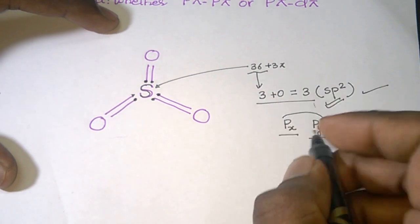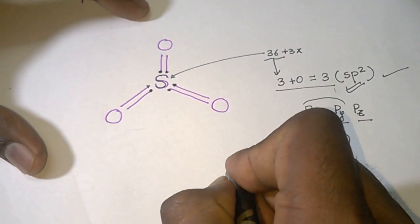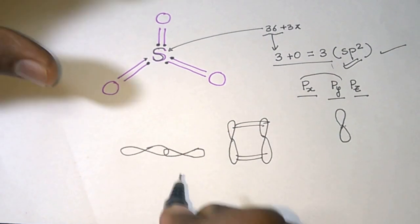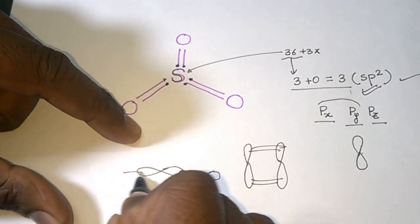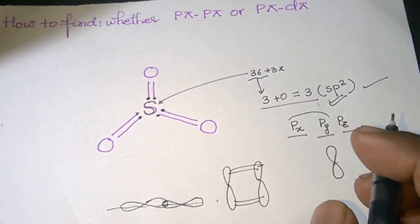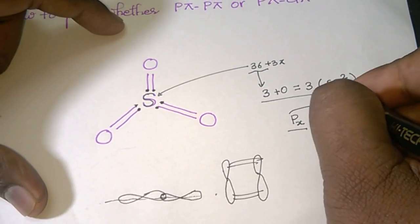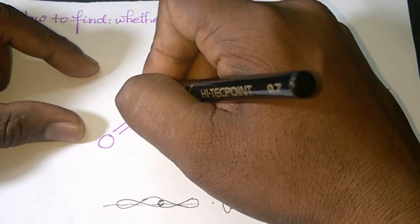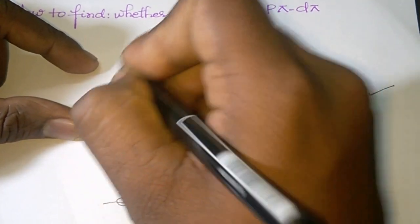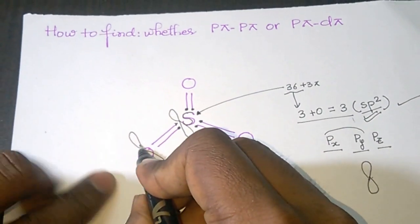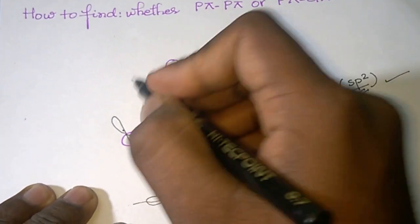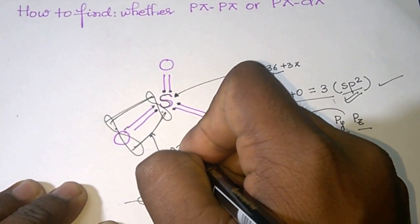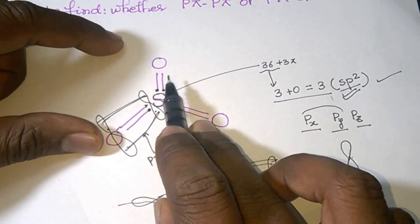Pi bonds are formed by lateral overlap of pure p orbitals, while sigma bonds are formed by overlap along the internuclear axis. So pi bonds are always formed by pure p orbitals. Here, one p orbital is left on sulfur. That p orbital of sulfur overlaps with a p orbital of oxygen, forming one p pi-p pi bond.